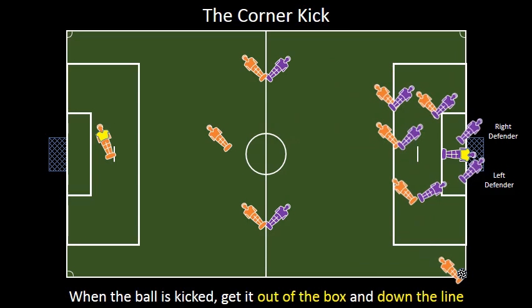We are now in position and the corner kick is about to happen. The other team takes the corner kick and one of our men gets it. If you are the one who gets the ball, you should immediately clear it down the line away from the goal. The ball should then be quickly cleared again onto the other side of the field.